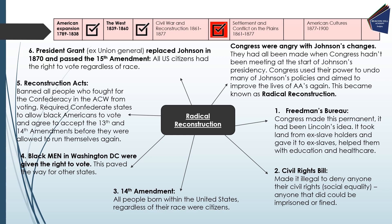Finally, President Grant — an ex-Union general — replaced Johnson in 1870 and passed the 15th Amendment, which states that all US citizens have the right to vote regardless of their race. Within a short period of time, the 13th Amendment banned slavery, the 14th Amendment made all people citizens regardless of race, and the 15th Amendment gave all US citizens the right to vote regardless of race. These are amendments you need to know and revise for the exam, along with additional policies that explain why Radical Reconstruction was such significant progress.